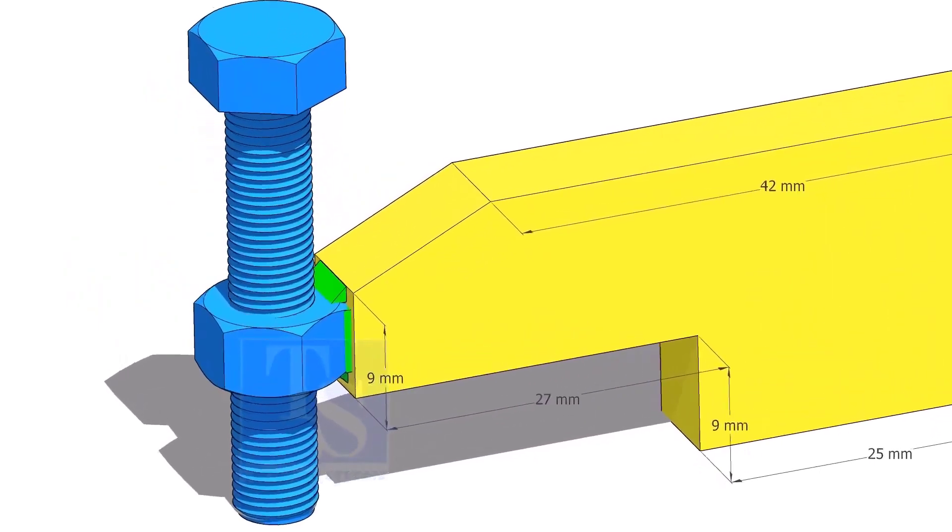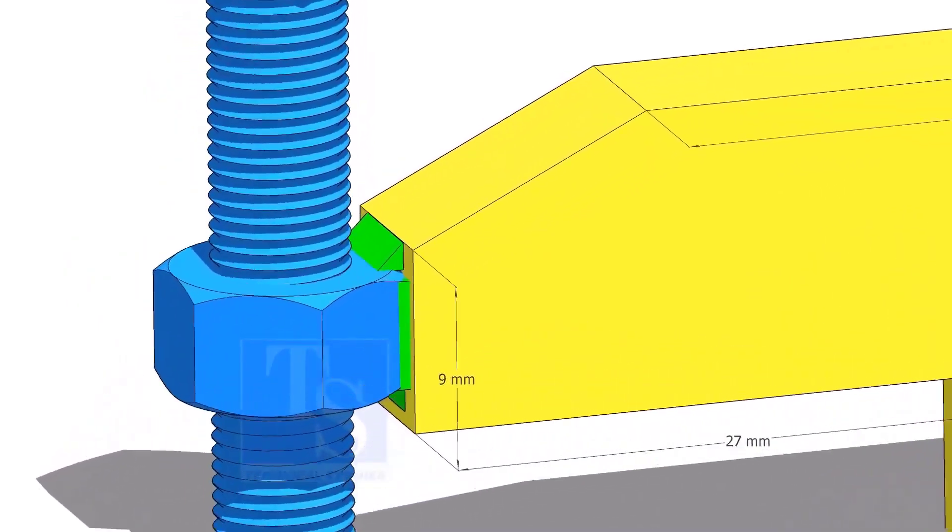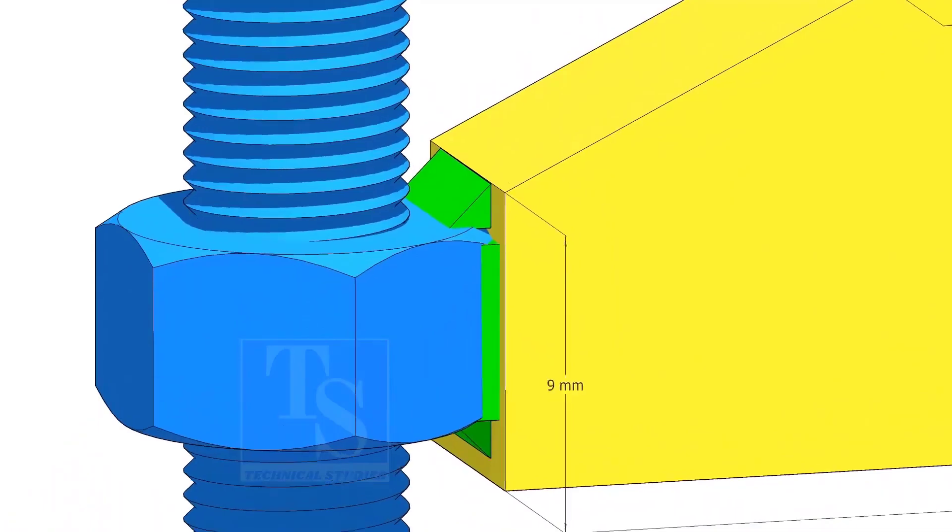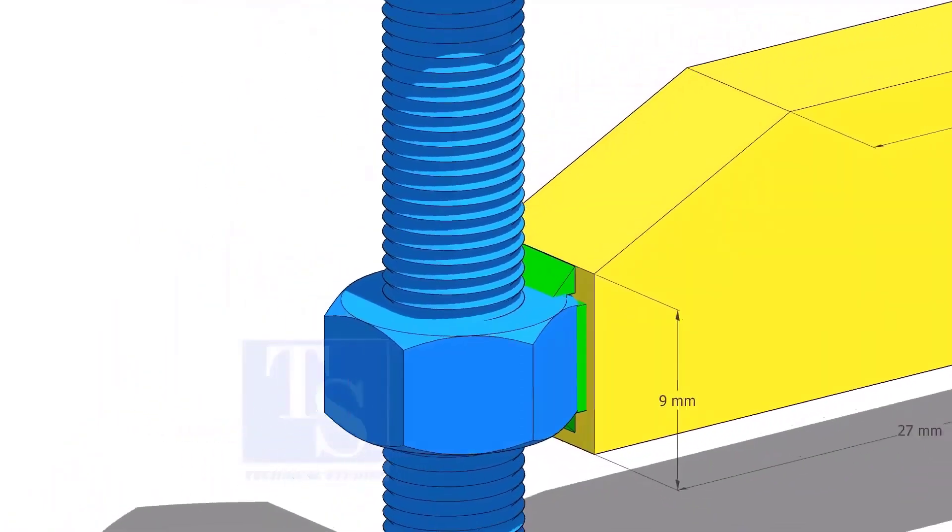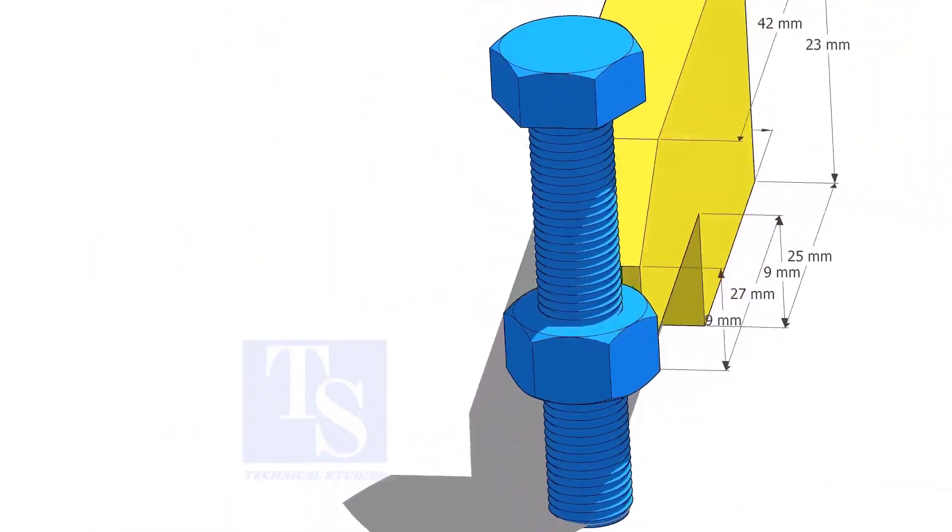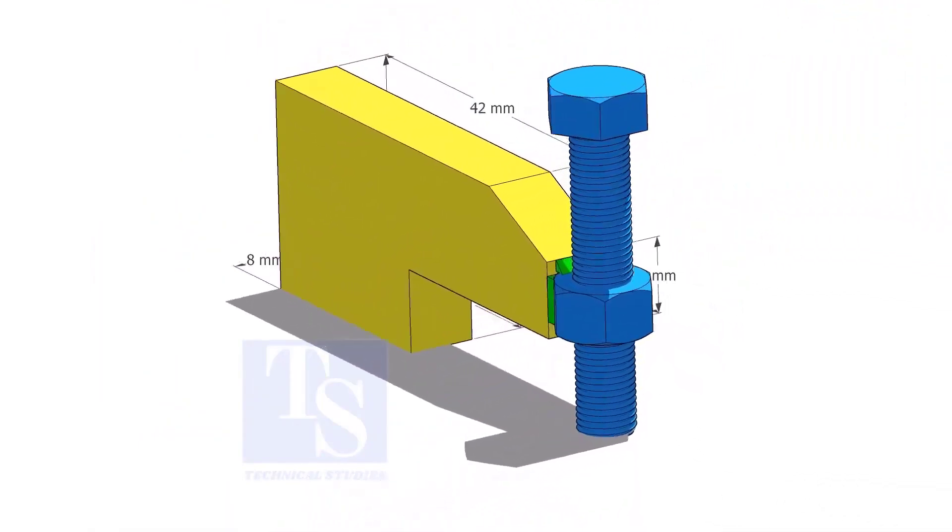For smaller pipes, the bolt size shall be half inch or 12 mm, the length shall be about 3 inches or 75 mm. Tack weld the nut to the L clamp as shown.